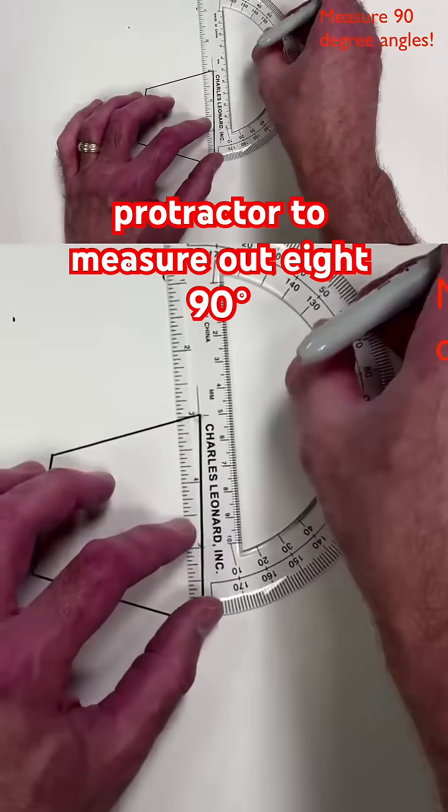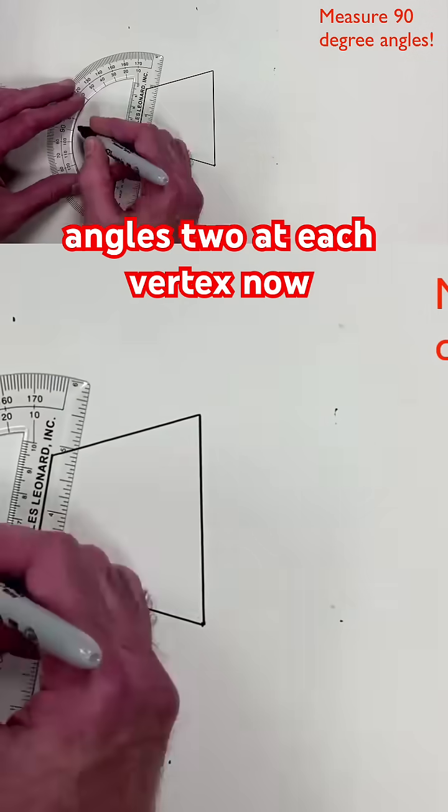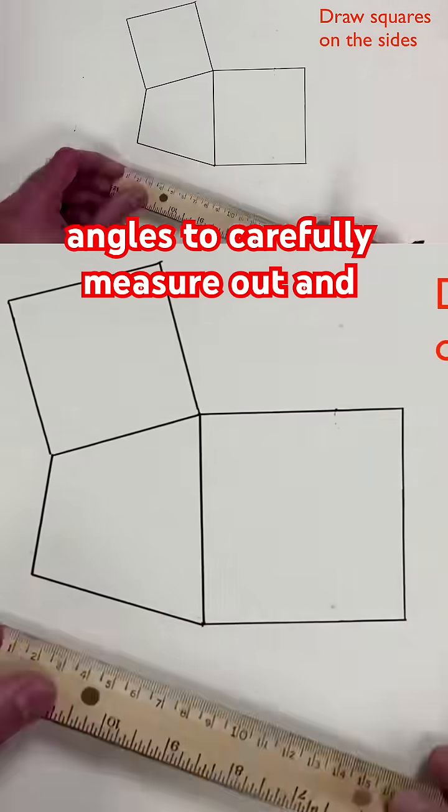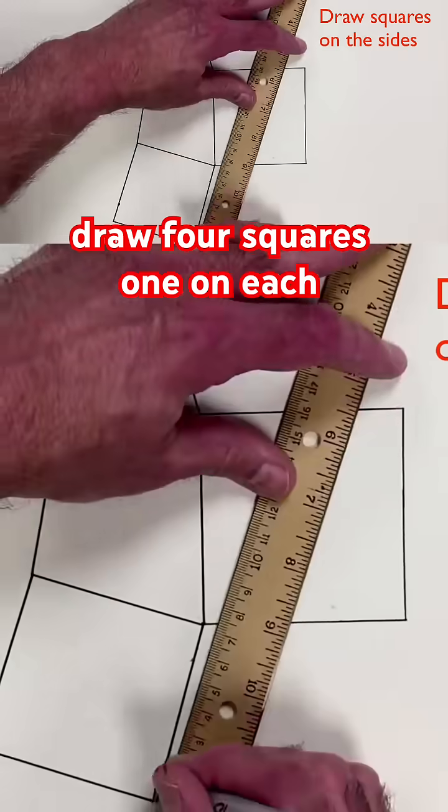Use a protractor to measure out eight 90-degree angles, two at each vertex. Now use the ruler and the right angles to carefully measure out and draw four squares, one on each side.